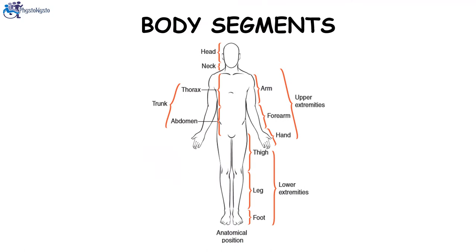The body segments are divided according to the bones. In the upper extremity, the arm bone is the humerus, which lies between the shoulder and the elbow joint. The forearm, composed of the radius and ulna, is between the elbow and the wrist. The hand is distal to the wrist. In the lower extremity, the thigh is formed by the femur between the hip and knee joint. The leg contains the tibia and fibula between the knee and ankle joint. The foot is distal to the ankle. The trunk has two segments: the thorax and the abdomen. The thorax is made up of the ribs, sternum, and mostly thoracic vertebrae. The abdomen is made up of the pelvis, stomach, and mostly lumbar vertebrae. The neck consists of cervical vertebrae, and the head (skull) are separate segments.